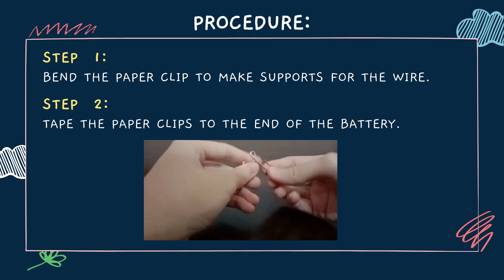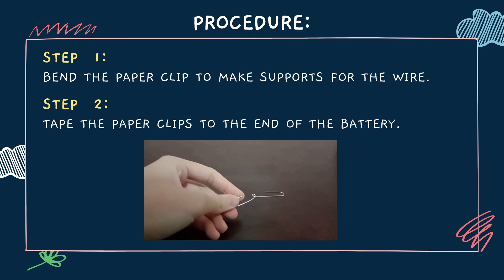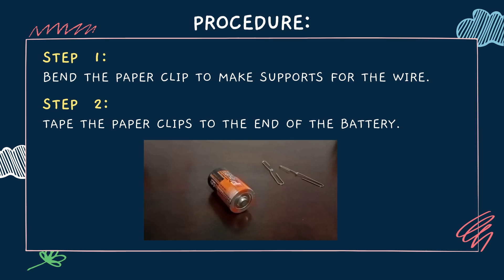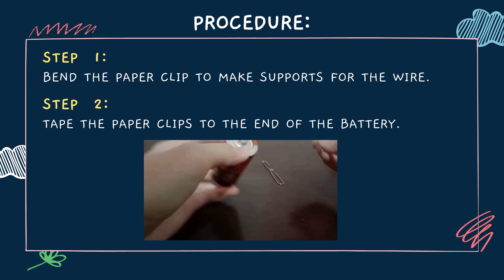First, bend the paper clip to make a support for the wire. Step 2, tape the paper clip to the end of the battery.